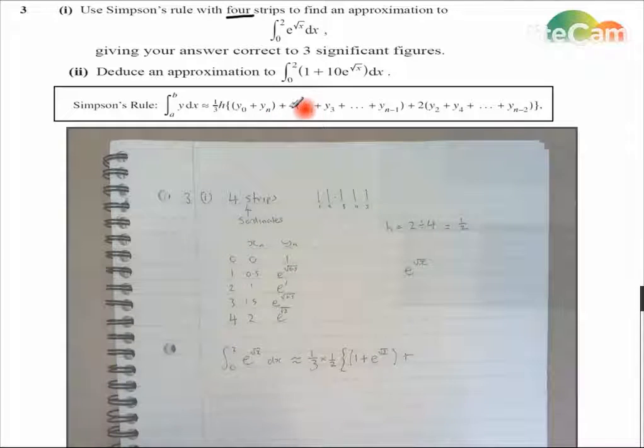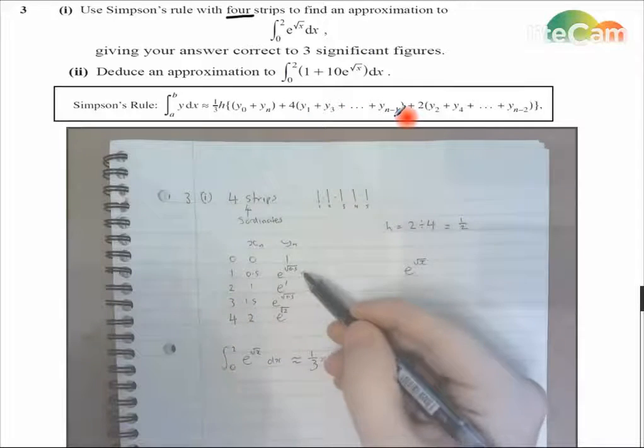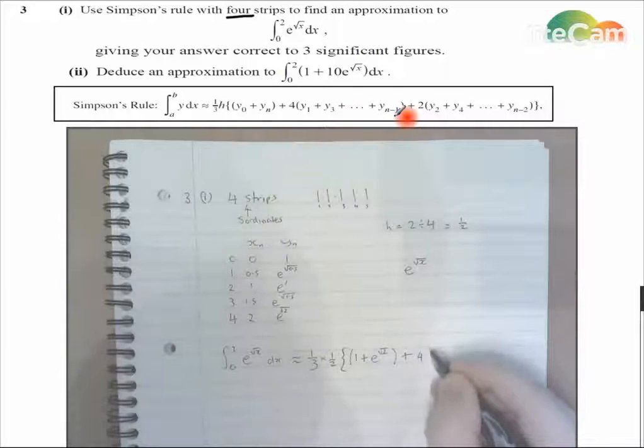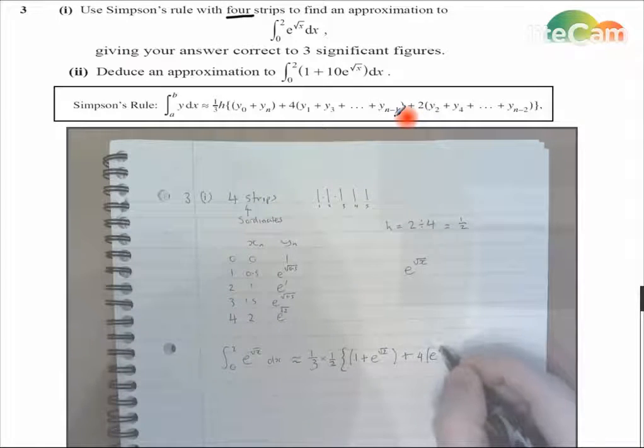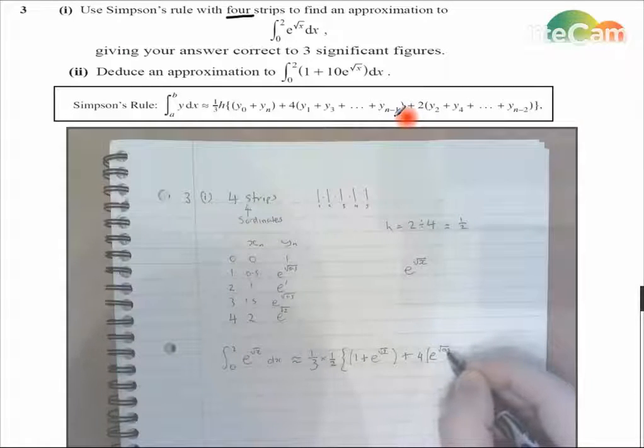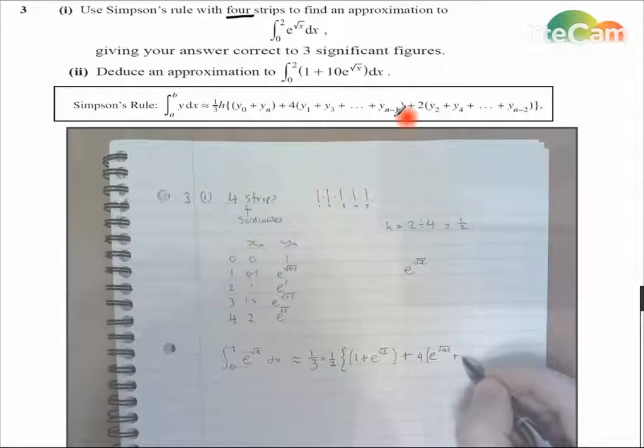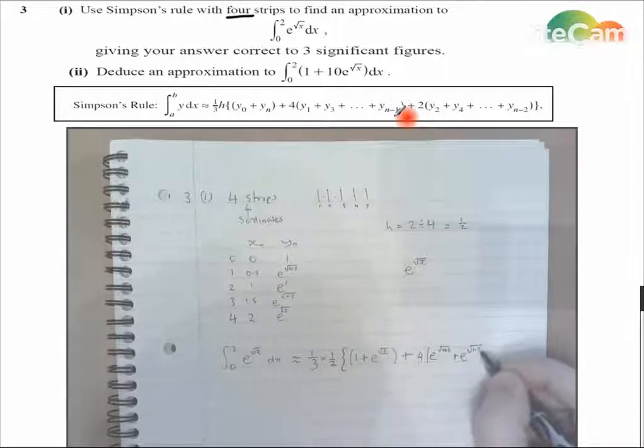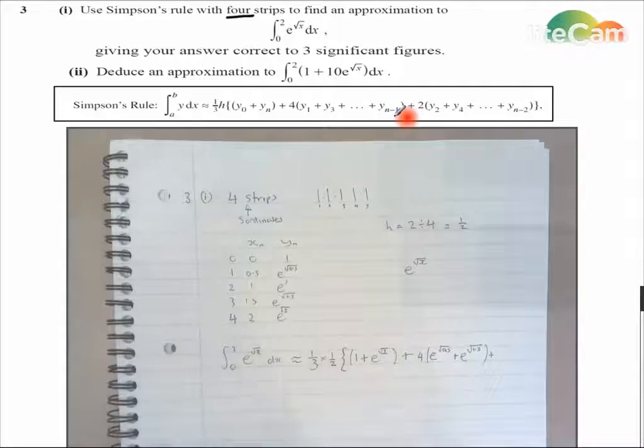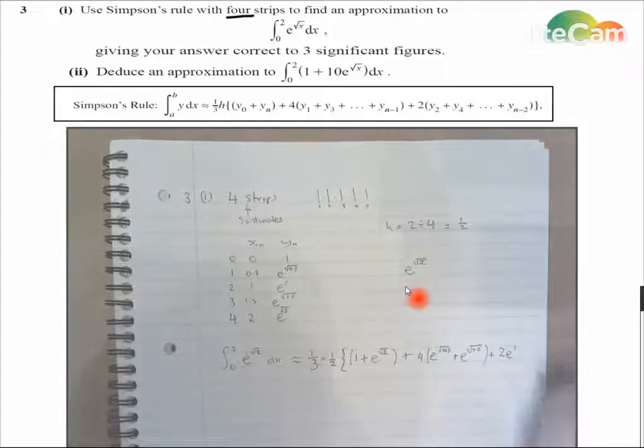Plus 4 lots of the odd ordinates. So that's this one and this one. 4 lots of e to the root 0.5 plus e root 1.5. Plus 2 lots of the even ordinates, of which we've only got this one. So plus 2 lots of e to the power 1.